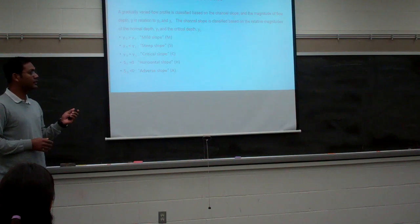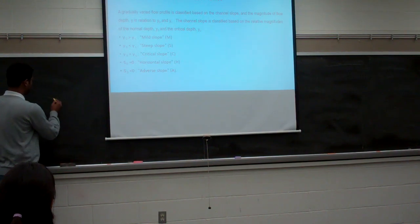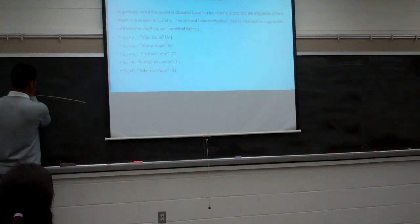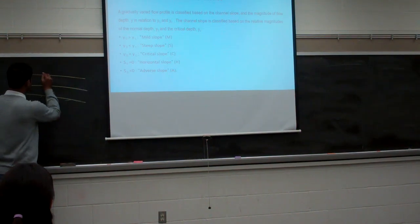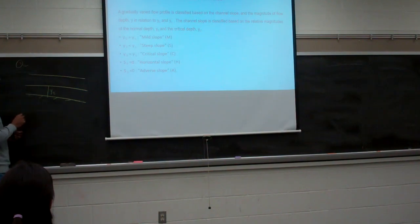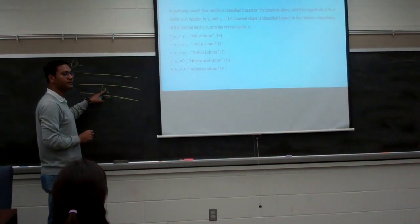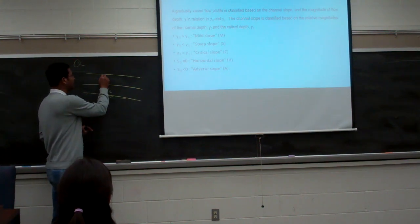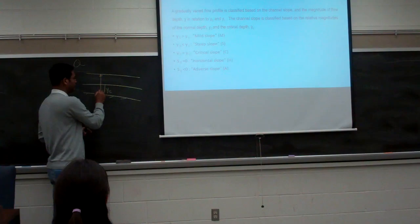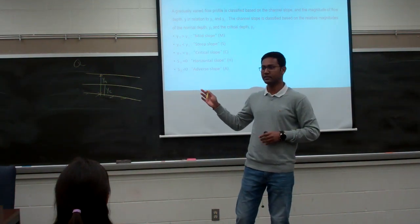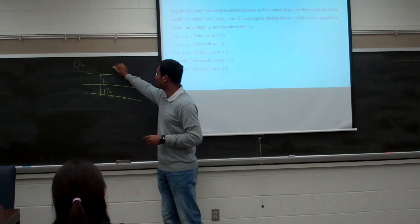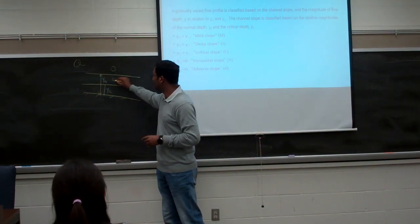So here is the notation. When the depth of water is critical — for any specific flow rate or discharge, there will be a specific critical depth. And if the flow is uniform, the depth of water is called normal depth. Based on these two — the normal depth and the critical depth — there will be three zones: zone one, two, and three.